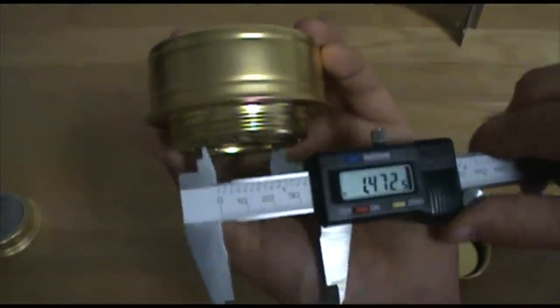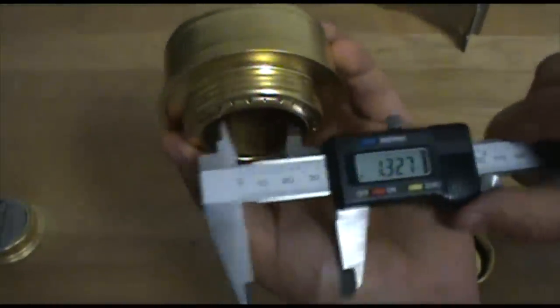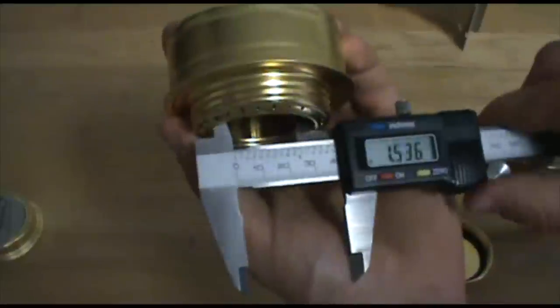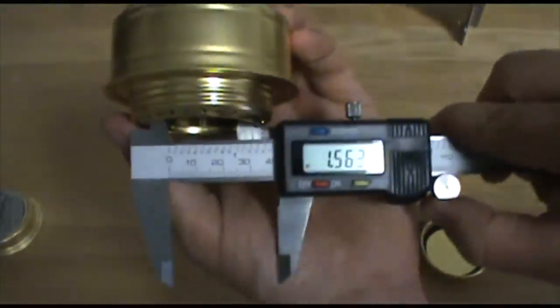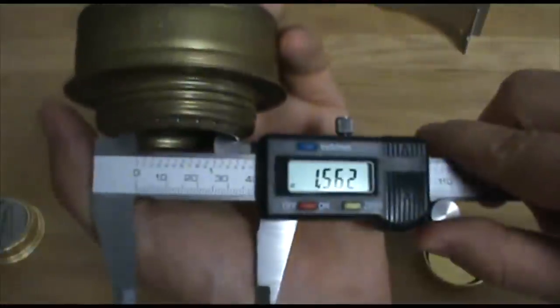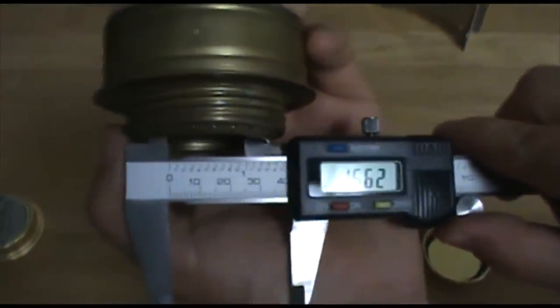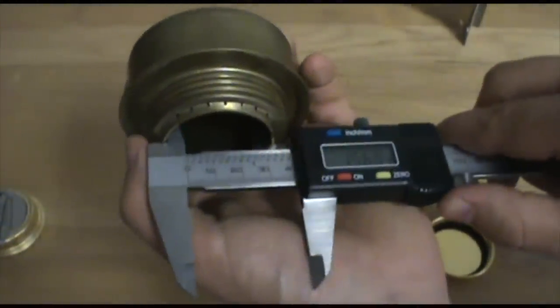The last dimension I'm going to do is the inside diameter of the burner here for the Esbit 1.56. Same thing for the Trangia for the inside dimension there.